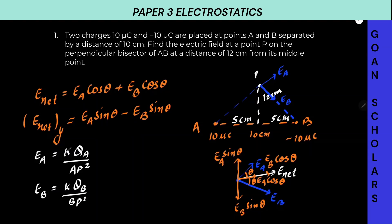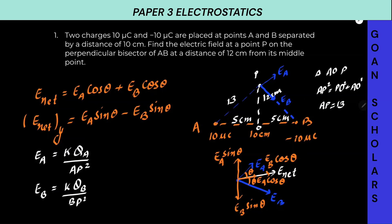Now, what are AP and BP? Looking at the triangle, let's call the midpoint O. From triangle AOP, using Pythagoras theorem: AP² = PO² + AO². AO is 5 centimeters and PO is 12 centimeters, so AP will be 13 centimeters. 5² is 25, 12² is 144, and 25 + 144 = 169, whose square root is 13. So AP = 13 centimeters.